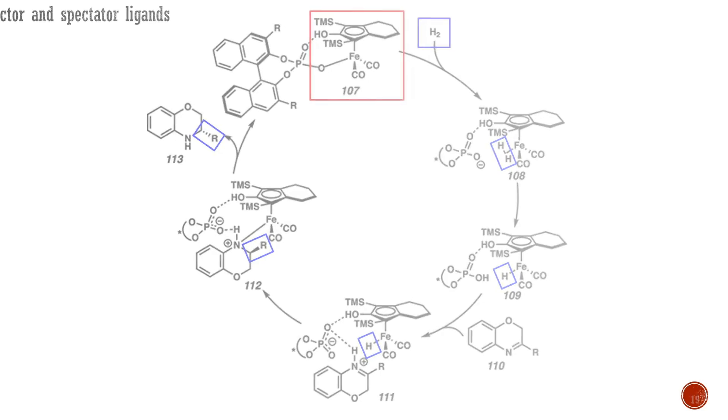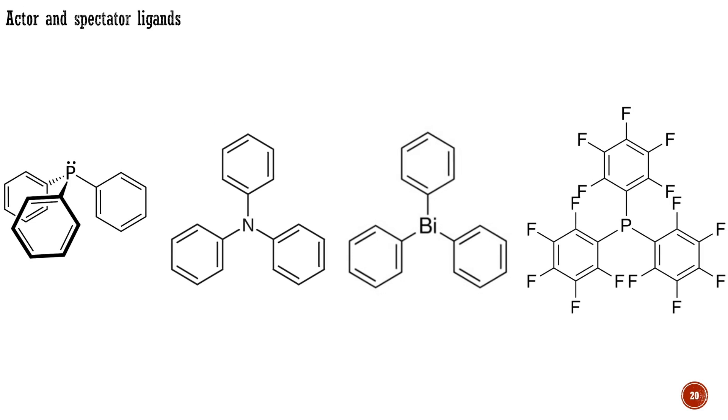It is an art to pick suitable spectator ligand sets to elicit desired properties. Apparently, small changes in ligand can entirely change the chemistry. For example, triphenylphosphine is an exceptionally useful ligand, while the similar triphenylamine, triphenylbismuth, and tris(pentafluorophenyl)phosphine are of very little use. The hard N-donor triphenylamine is very different from triphenylphosphine, while the bismuth-phenyl bond is too easily cleaved for triphenylbismuth to be a reliable spectator. And the electron-withdrawing pentafluorophenyl substituents of tris(pentafluorophenyl)phosphine completely deactivate the phosphorus lone pair.